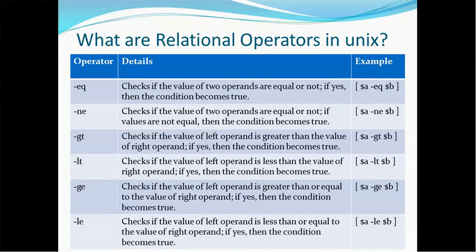GE stands for greater than or equal. It checks if the value of the left operand is greater than or equal to the value of the right operand — if yes, then the condition becomes true. LE stands for less than or equal. It checks if the value of the left operand is less than or equal to the value of the right operand — if yes, then the condition becomes true.